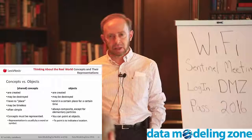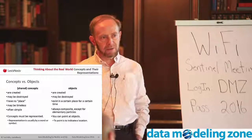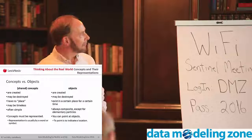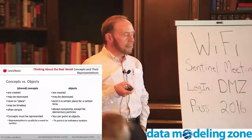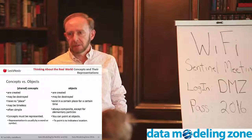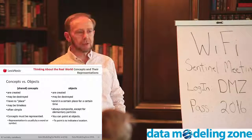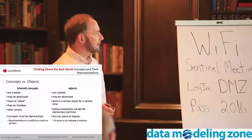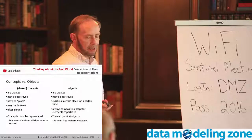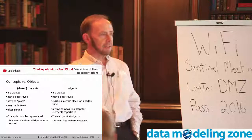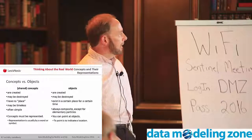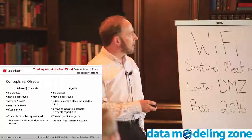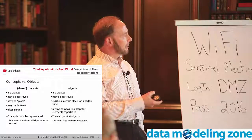Objects are always composite, unless you're a nuclear physicist and we're not modeling to that level. Concepts must be represented — you have to be able to name a concept, illustrate a concept, use a symbol for a concept, whereas objects you can point at them. I can point at my dozen eggs. So there's the contrast between concepts and objects.